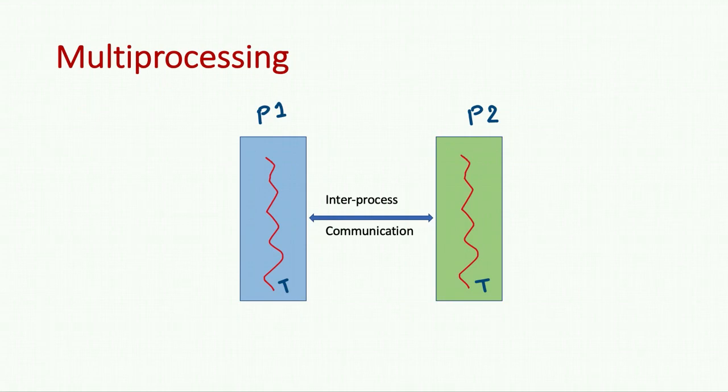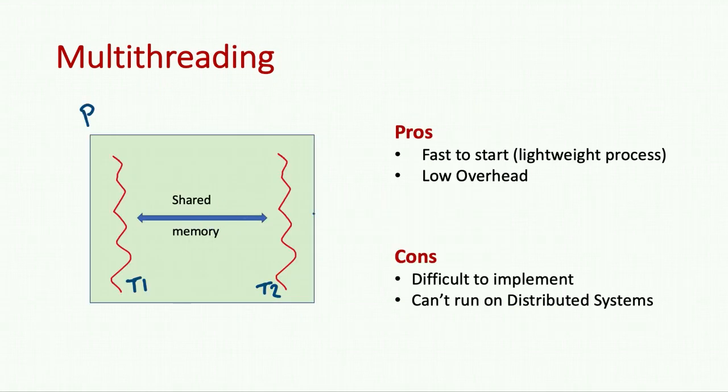The communication between these threads happens by shared memory. You see here the communication was through inter-process communication channel, and here it's through shared memory. There are pros and cons of both. First, let's see the advantages of multi-threading. We call threads lightweight processes, so these are very fast to start and have low overhead.